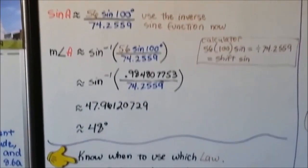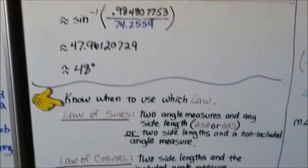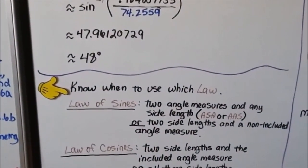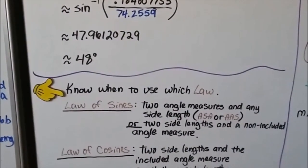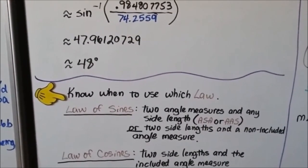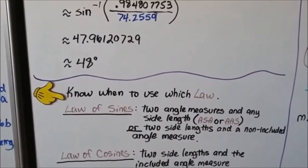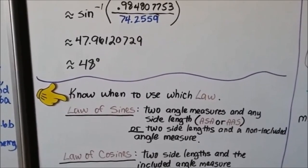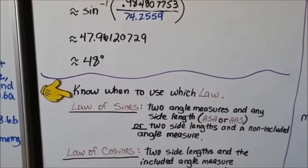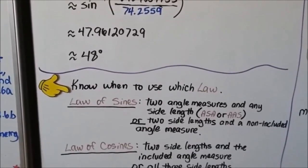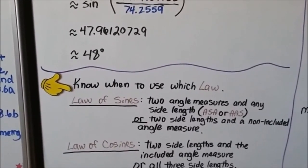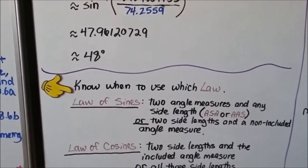It's really important to know when to use which law. For the law of sines, use it when you have two angle measures and any side length — ASA or AAS — or two side lengths and a non-included angle measure. Use the law of cosines when you have two side lengths and the included angle measure SAS, or all three side lengths SSS.